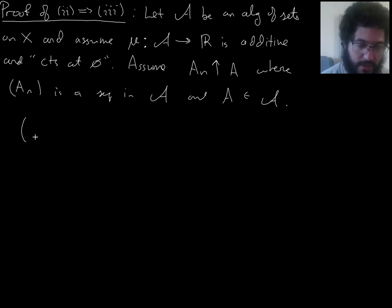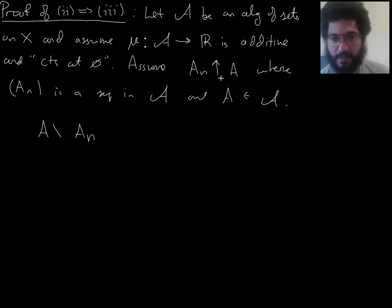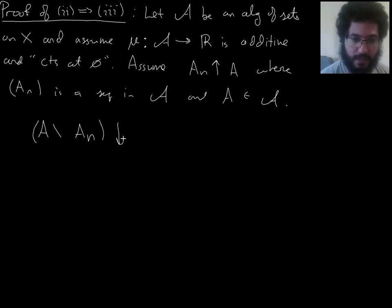So, here's one. Take the complements of the A_n's. So, remember, since the A_n's are building up to A, they're nested and building up to A, their union is A, they're all subsets of A. So, here I'm just deleting these subsets. And I claim that this goes down to the empty set.